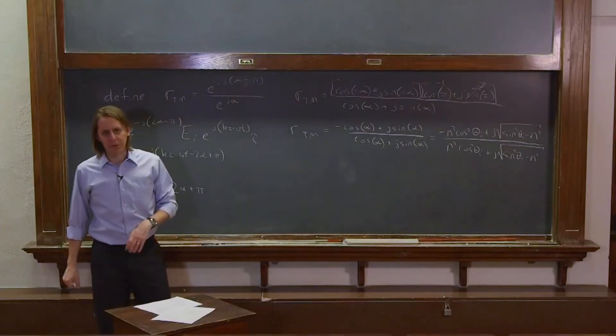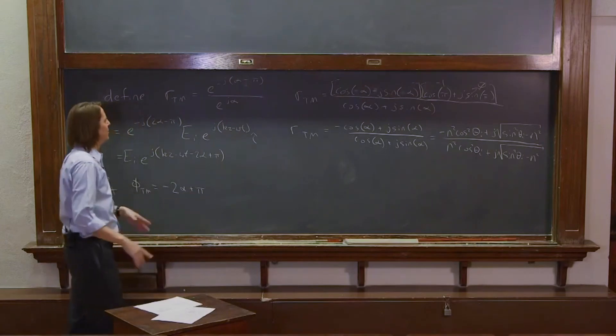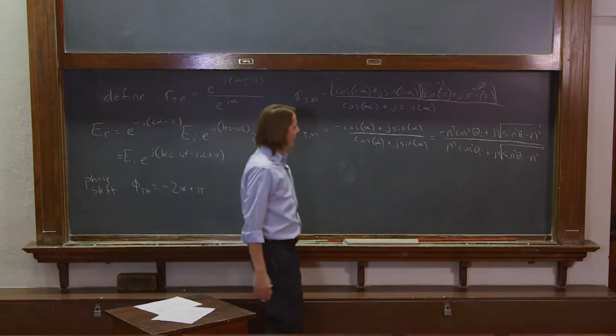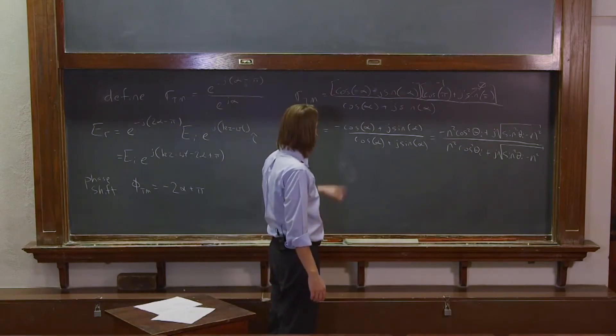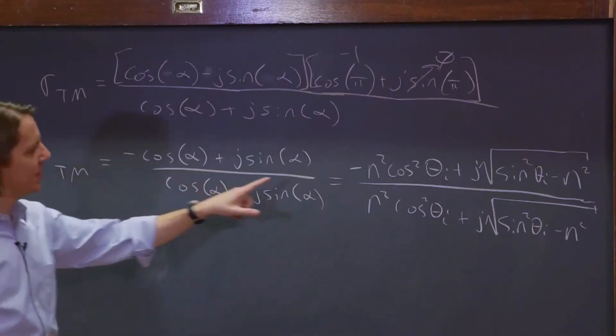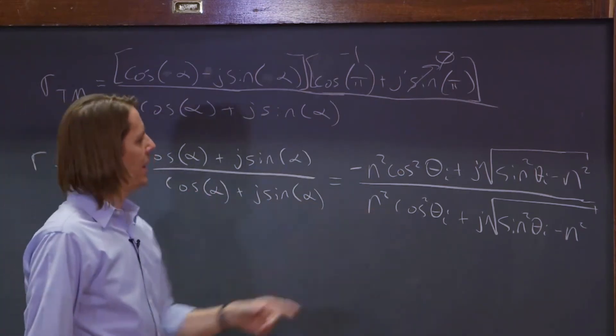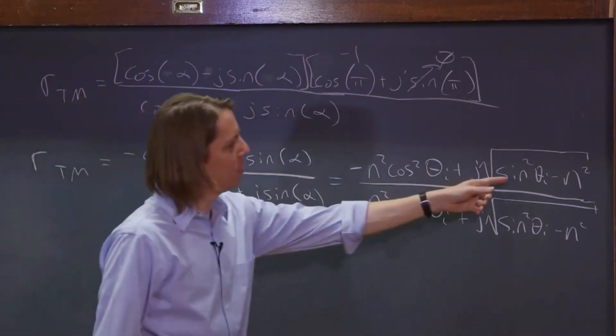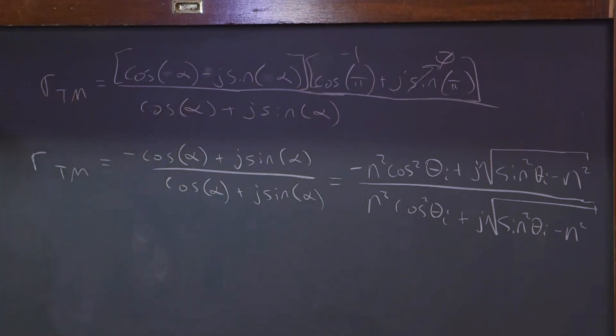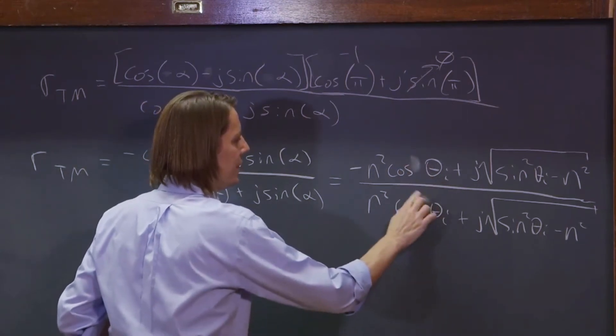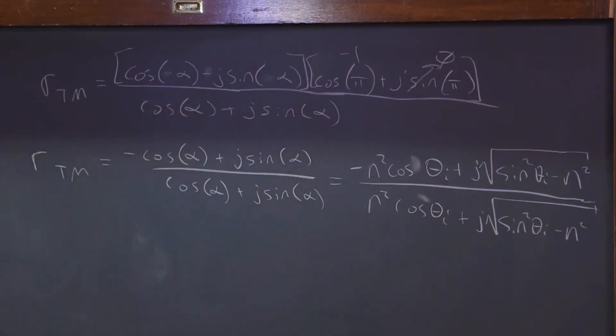This was plus n squared cosine theta i plus j times the square root of sine squared theta i minus n squared. So as I've said before, a lot of physics problems you can't just solve. You have to have some experience and insight into the problem. So from this, you can see that cosine alpha then is n squared cosine theta i, right? And you can see that sine alpha is the square root of sine squared theta i minus n squared. And of course, these cosines are not squared. So that's, I knew I was doing something wrong. There it is. Those are just cosine theta i.